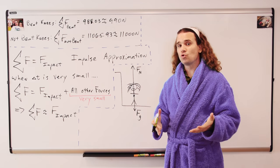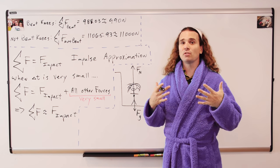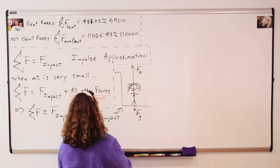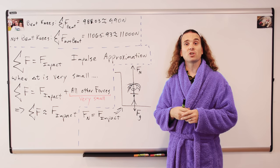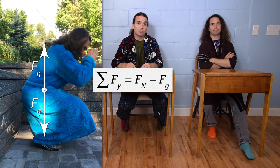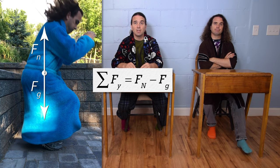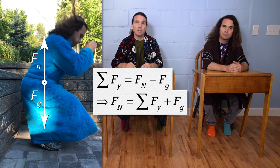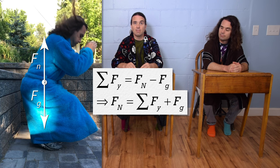Correct, and the force normal in this particular case is the force of impact acting on my body during the collision. So Bobby, please sum the forces and solve for the force normal. The net force in the y direction equals force normal minus force of gravity. Add force of gravity to both sides and force normal equals the net force plus the force of gravity.